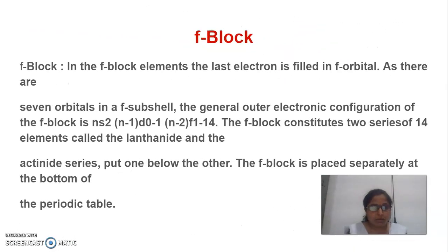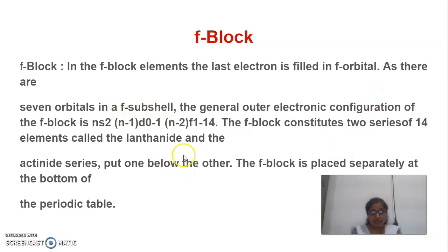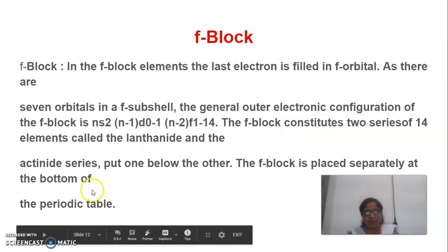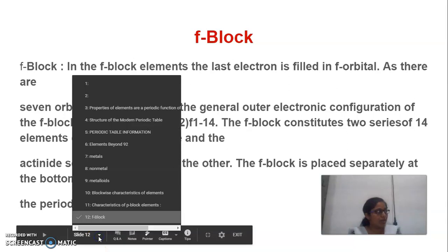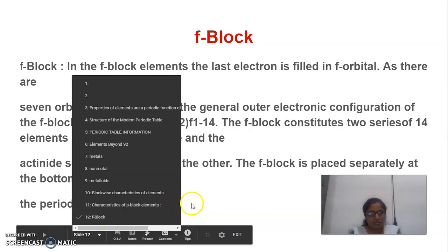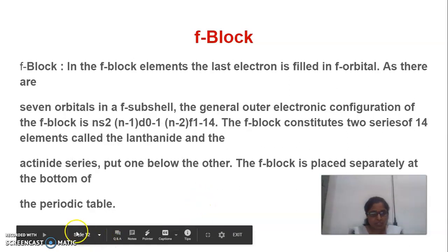Then we will see the F block elements. F block elements are those in which the last electron is filled in the F orbital. As there are seven orbitals in the F subshell, these constitute 14 elements — the Lanthanides and Actinoids. They are placed separately below the periodic table. Thank you very much.